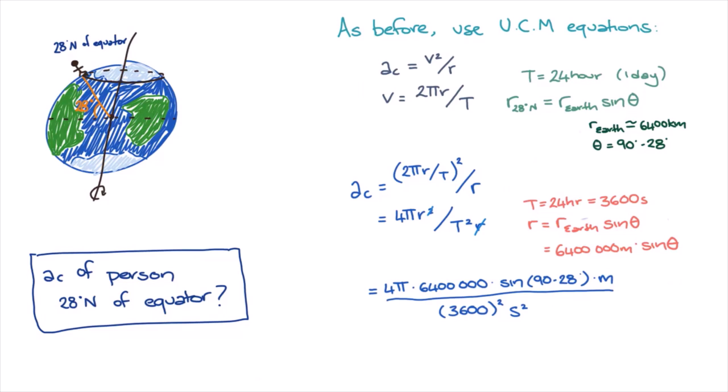Now, we could plug these numbers into a calculator to get our answer, or we could make life a bit easier by recognizing that all of these terms are the same as in our previous example, except for our sine theta. And all of these terms will multiply together to give us 0.034 meters per second squared.